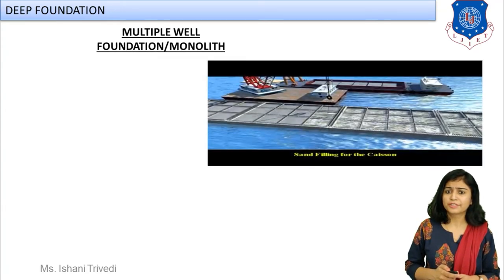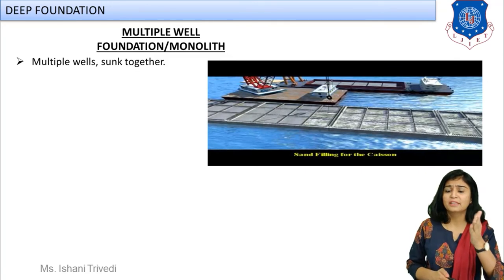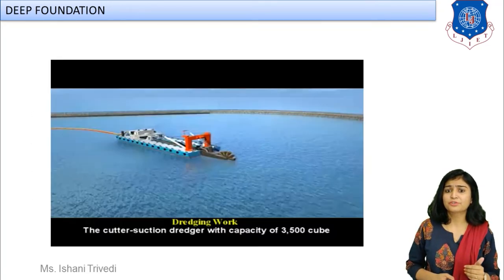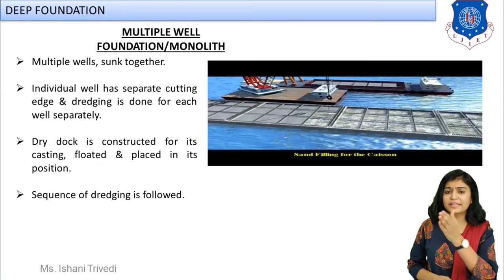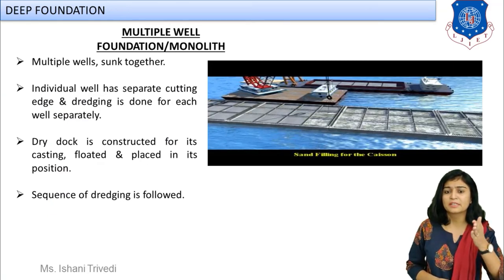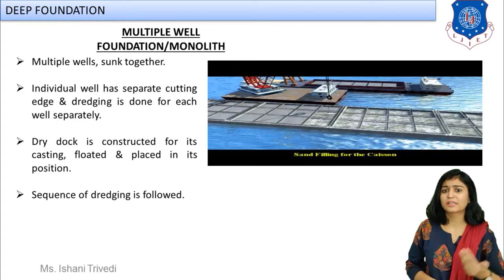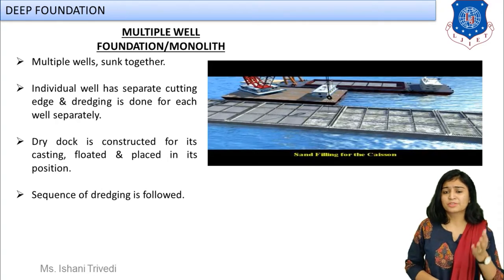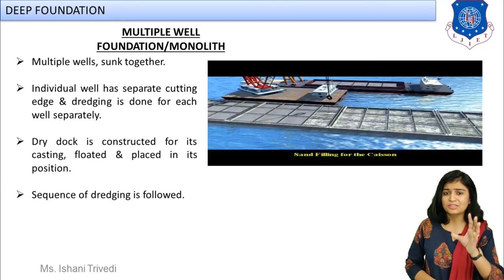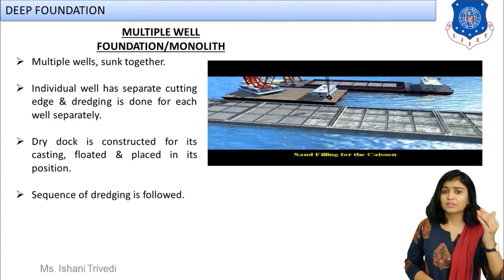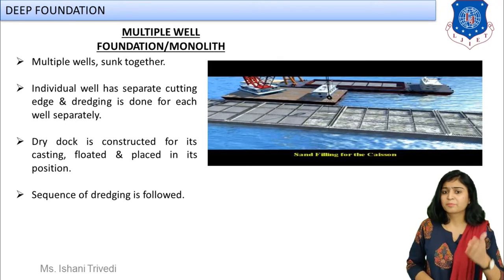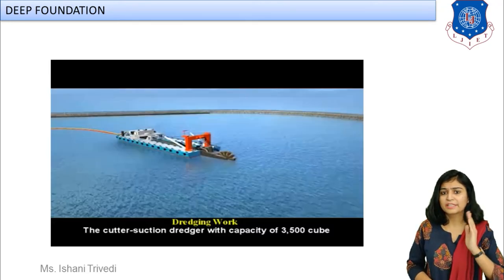For the monolith or multiple well foundation, a number of single wells are arranged in a grid-like structure. This is generally done for underwater or seawater construction. Partial construction of the well steining, well curb, and cutting edge is done on the casting yard, then it is floated to the site, dredging work is performed, the well foundation is laid, and concreting work is done.